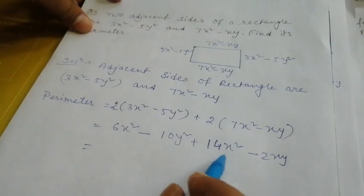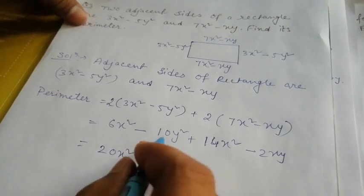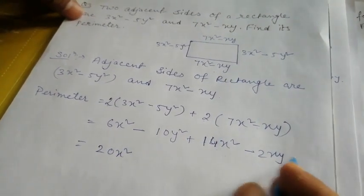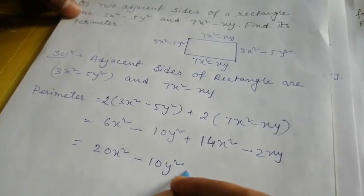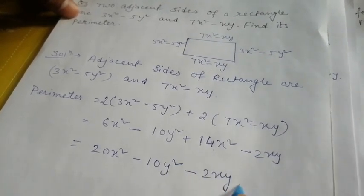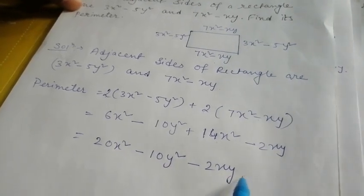Now combine x² terms: 6x² + 14x² = 20x². Minus 10y² - there's only one y² term. And minus 2xy. So your answer is 20x² - 10y² - 2xy.